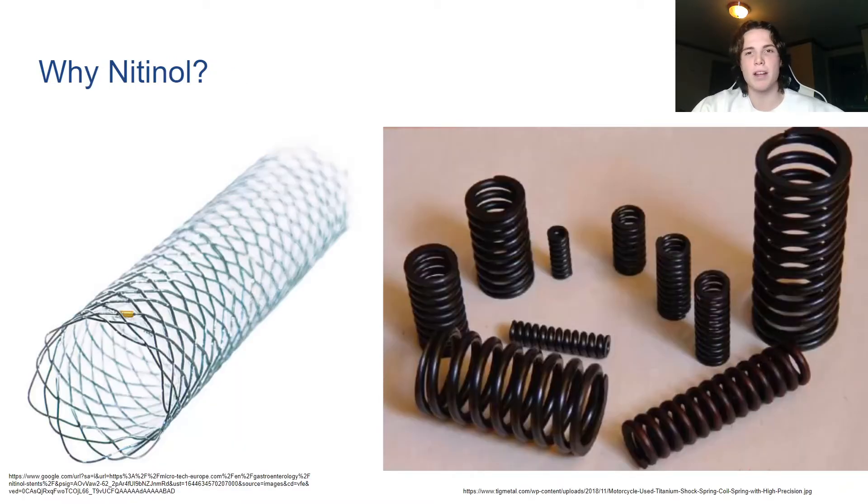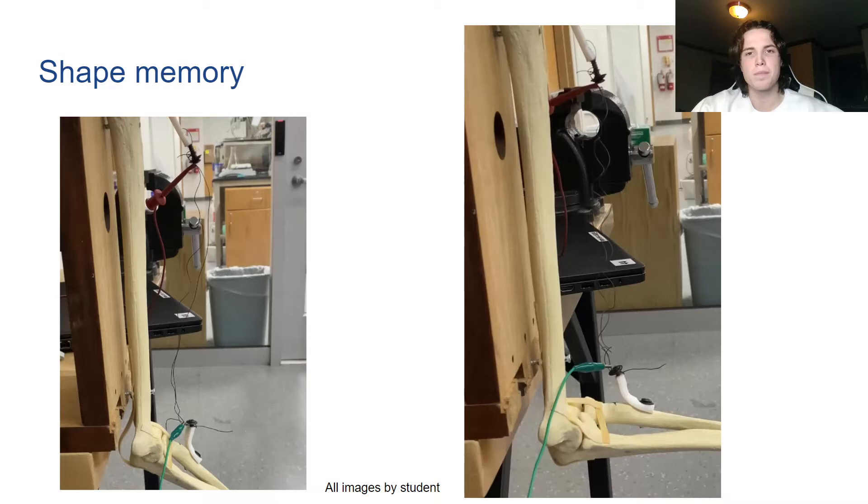But why Nitinol? Nitinol's shape memory and biocompatibility could make it uniquely capable for internal muscle replacement. Nitinol has a shape predetermined during manufacturing that when heat is applied it will exert a force to return to that original shape. In this case, when heat is applied via electric current through the wire that makes it contract like a muscle. The heat necessary for Nitinol to contract is called the transition temperature.